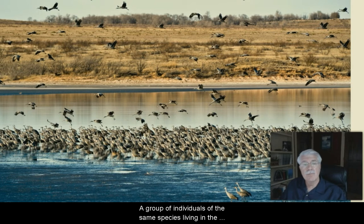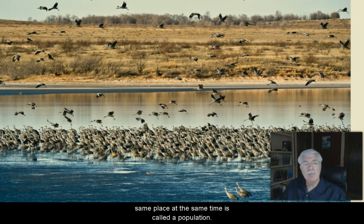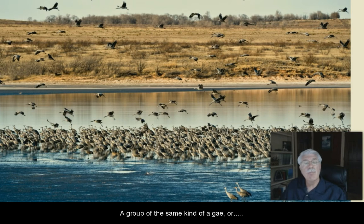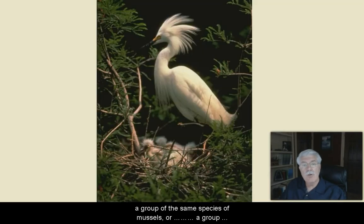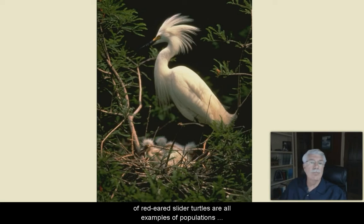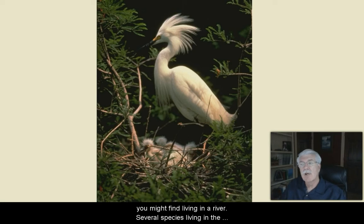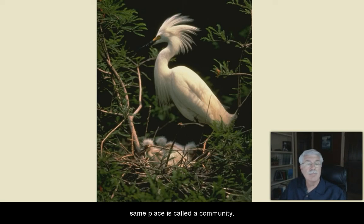A group of individuals of the same species living in the same place at the same time is called a population. A group of the same kind of algae, or a group of the same species of mussels, or a group of red-eared slider turtles are all examples of populations that you might find living in a river.